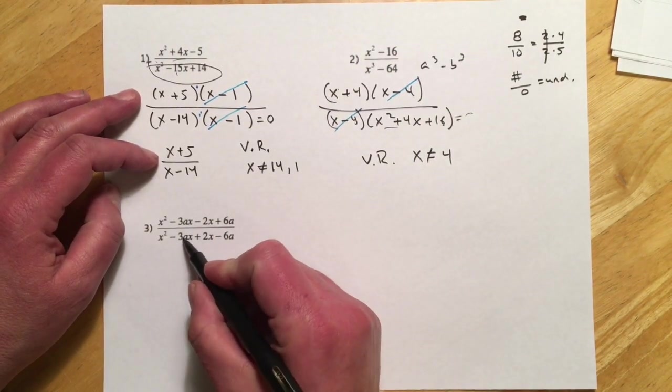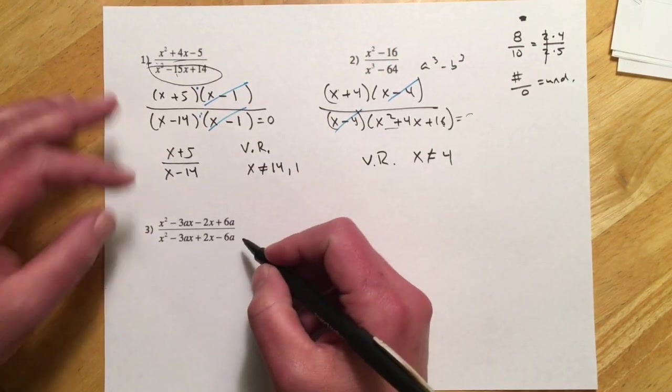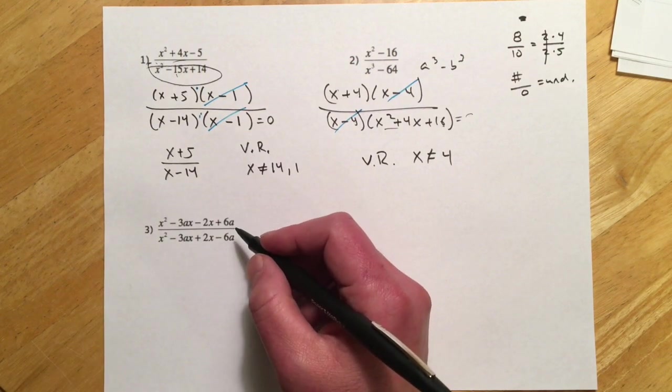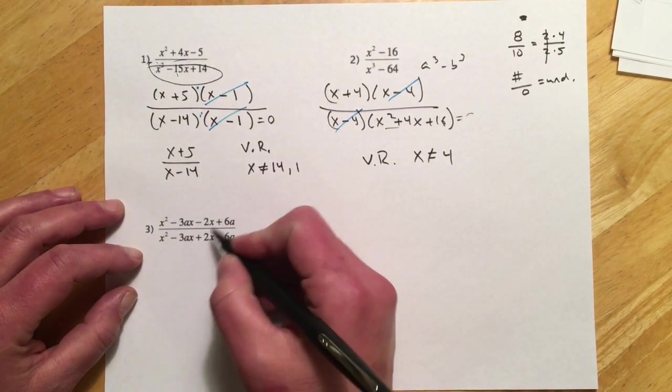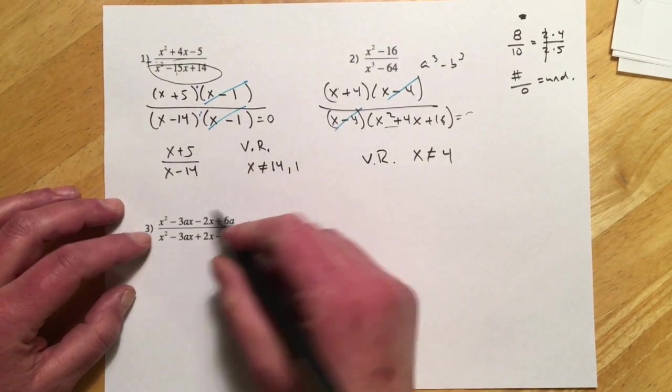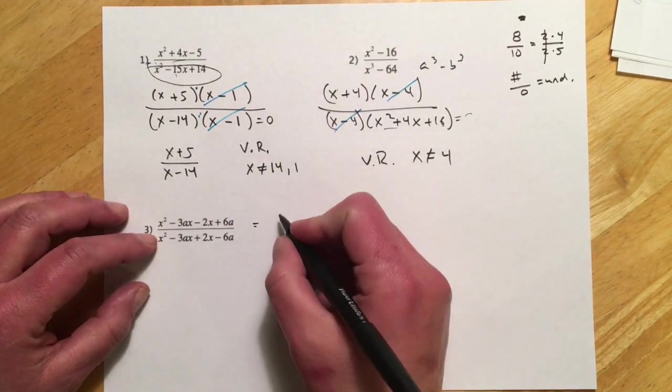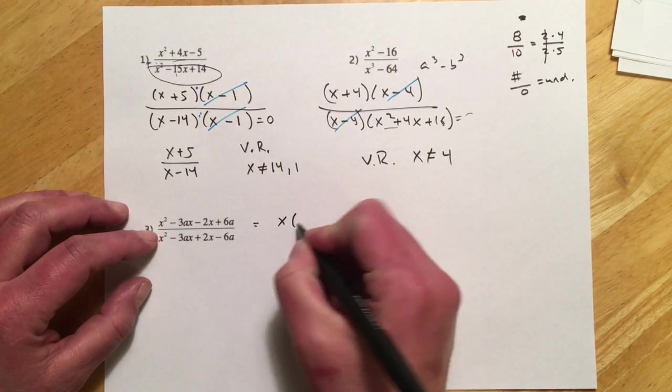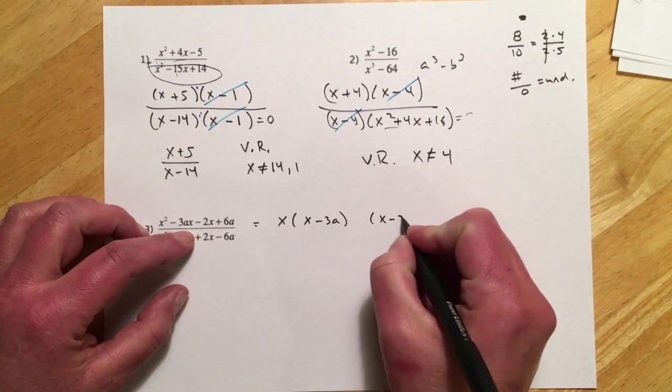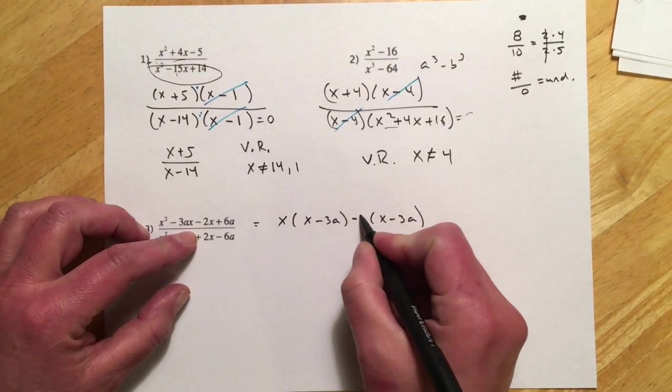This next one, for the problems that have more than one variable, they won't ask you for the restrictions. Not meaningful with the a and the x. So pretty much we just have to get these factored and canceled. And this is one of those ones that's incredibly tempting to just start canceling a bunch of stuff, which is not a good plan. So we want to always factor first. So these first two, it's four terms. We're going to do grouping. I can take an x. And that's going to leave me an x minus 3a. I need another x minus 3a. And so if I write that down, it helps me see I need to pull a negative 2 out of here.